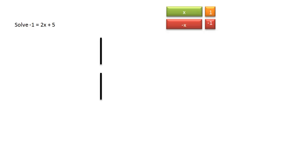Our third example is a bit more challenging. We are asked to solve negative 1 equals 2x plus 5. So we start with the negative 1 tile, and it's equivalent to 2 of the x tiles plus 5 of the 1 tiles.